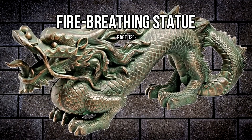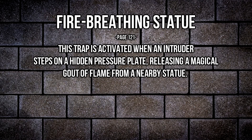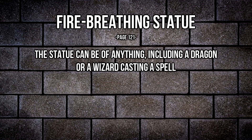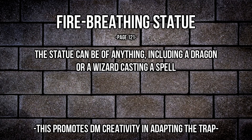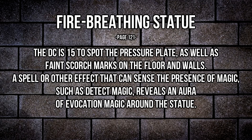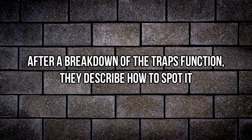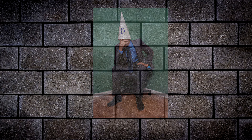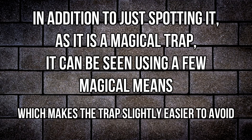So that's how I make traps, but if you're looking for a more concrete description, let's run through a trap from the book. This fire-breathing statue is pretty dope. The trap is activated when an intruder steps on a hidden pressure plate, releasing a magical gout of flame from a nearby statue. Right out the gate they describe the trigger, which is probably the first thing a DM should know when running a trap. The statue can be of anything, including a dragon or a wizard casting a spell. The DC is 15 to spot the pressure plate, as well as faint scorch marks on the floors and walls. A spell that can sense magic, such as detect magic, reveals an aura of evocation magic around the statue. The second thing they describe here is visibility.